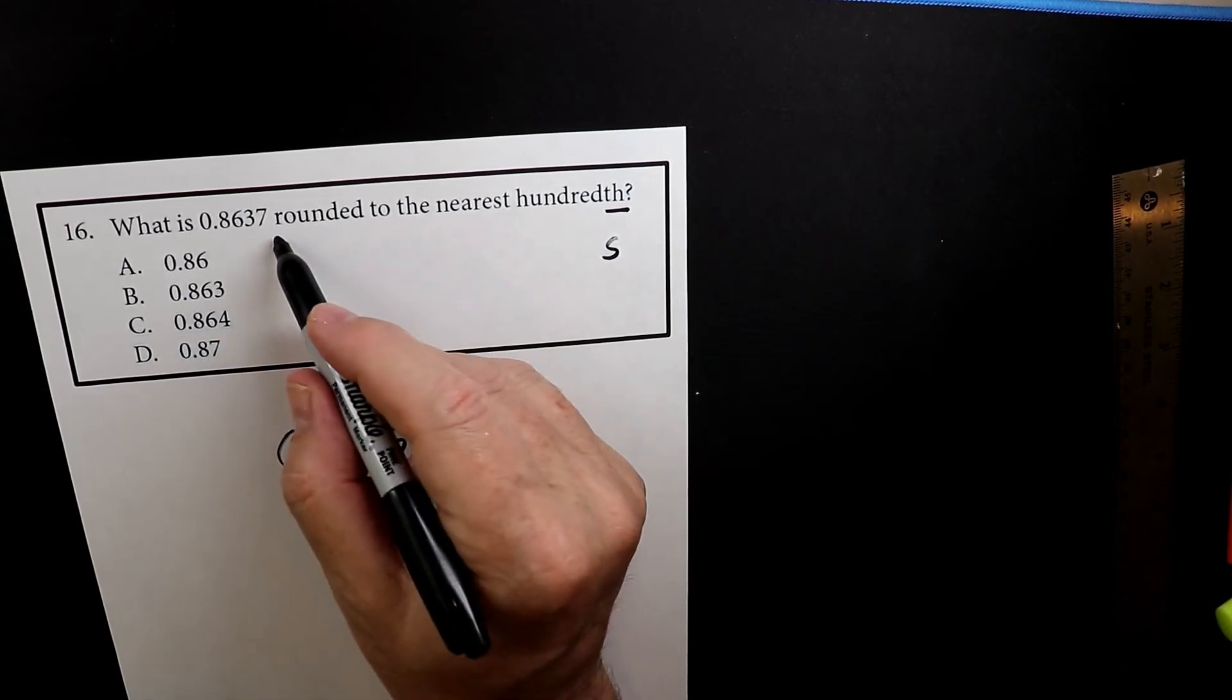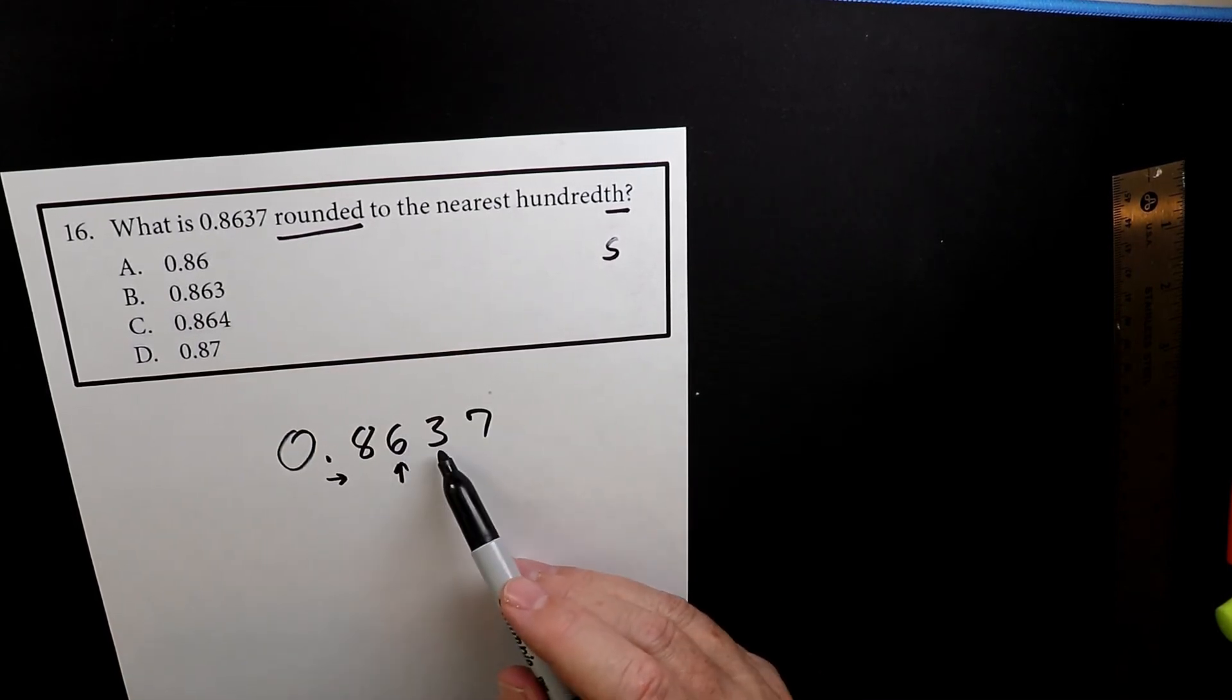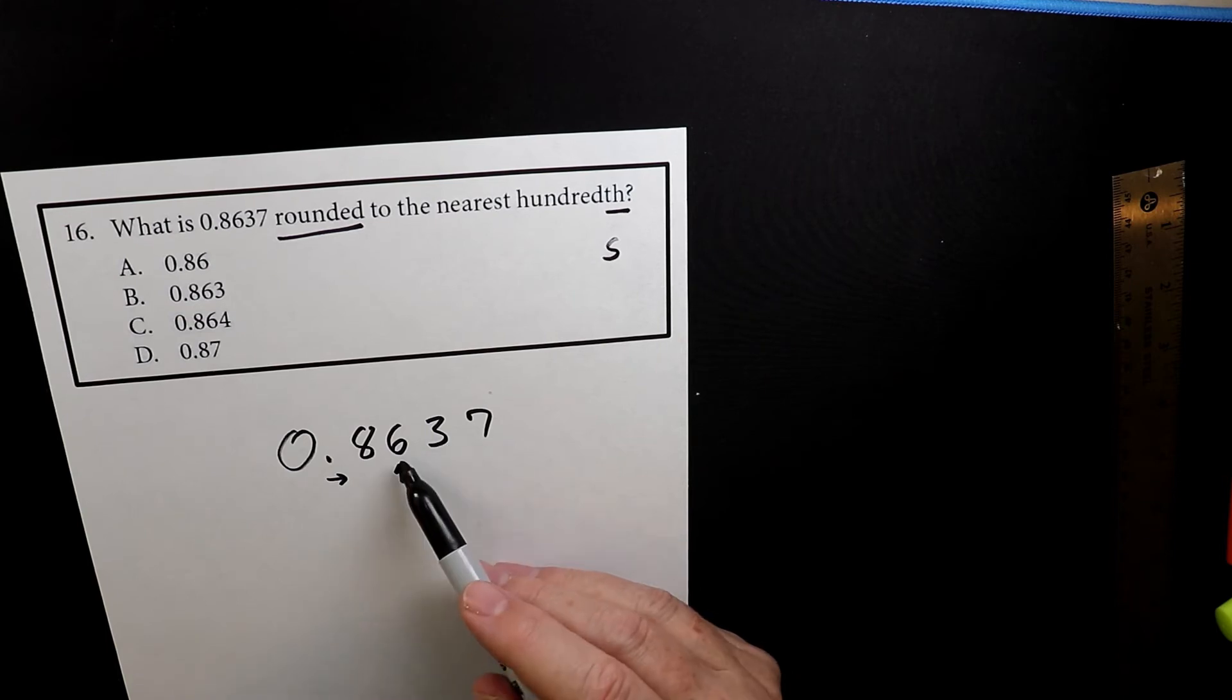So we're going to focus on the 6. Now, when you're doing rounding, what you do is you look to the number to the right. If this number is less than 5, then it stays the same.